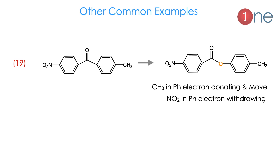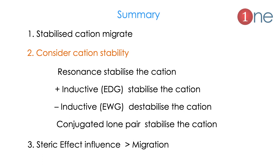Example 19: a carbonyl group flanked by a nitro-substituted benzene and a methyl-substituted benzene. Nitro is electron-withdrawing and decreases electron density; methyl is electron-donating and increases electron density. So migration happens with the methyl-substituted group — it is the more stable cation.